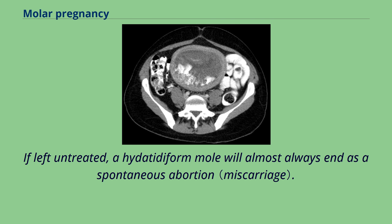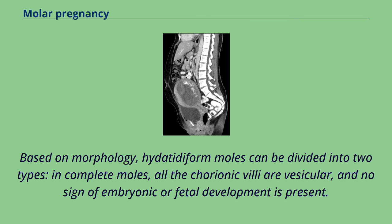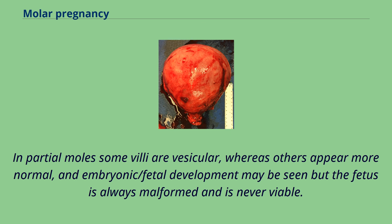If left untreated, a hydatidiform mole will almost always end as a spontaneous abortion. Based on morphology, hydatidiform moles can be divided into two types. In complete moles, all the chorionic villi are vesicular, and no sign of embryonic or fetal development is present. In partial moles, some villi are vesicular whereas others appear more normal, and embryonic or fetal development may be seen, but the fetus is always malformed and is never viable.